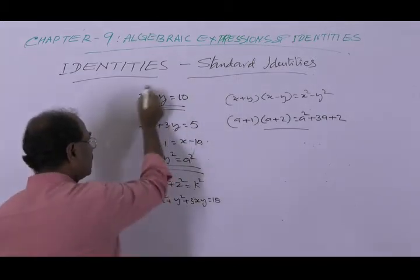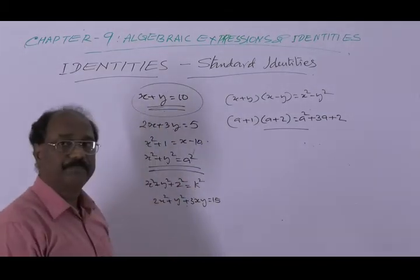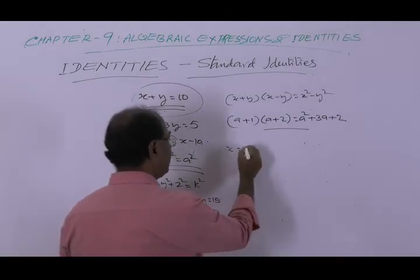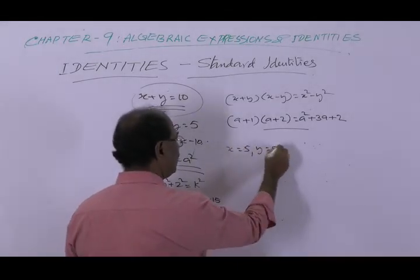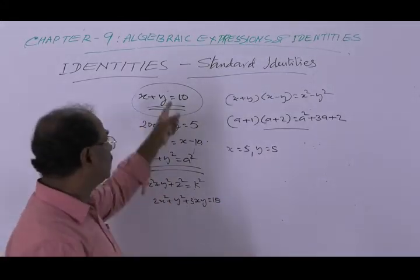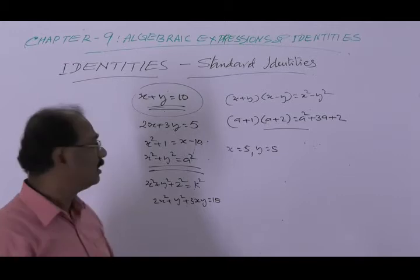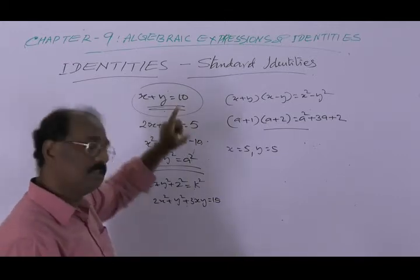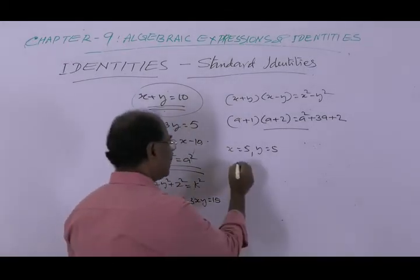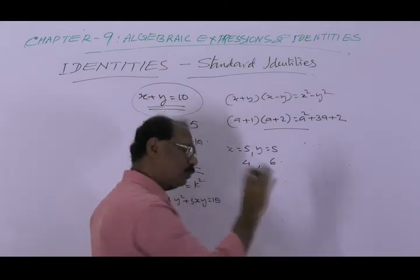For example, consider the equation x plus y equal to 10. If we take x equal to 5 and y equal to 5, the equation is true — x plus y is 5 plus 5, which is equal to 10. If we take x equal to 4 and y equal to 6, it is again true.